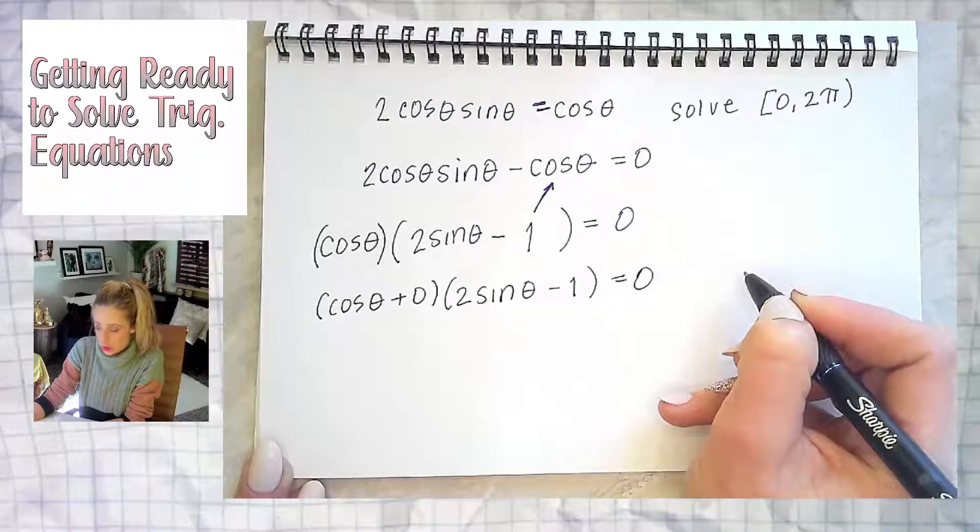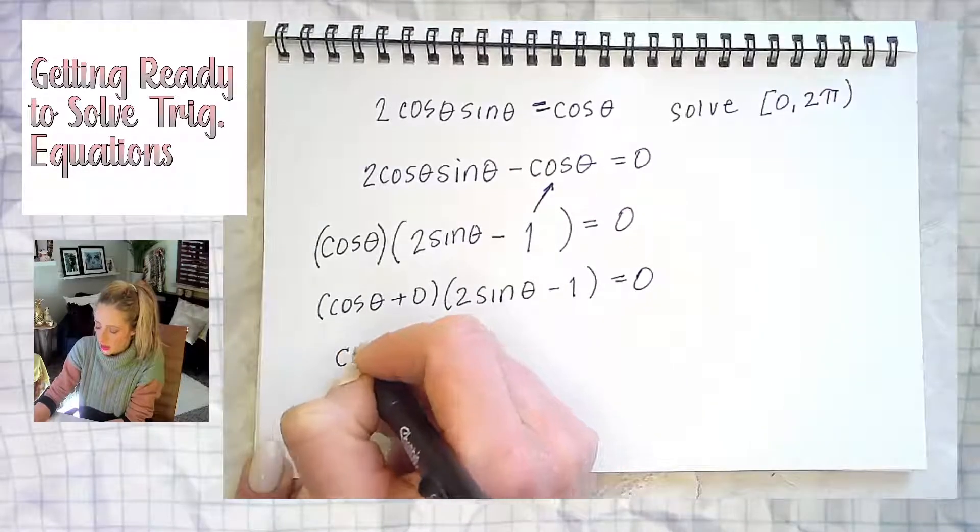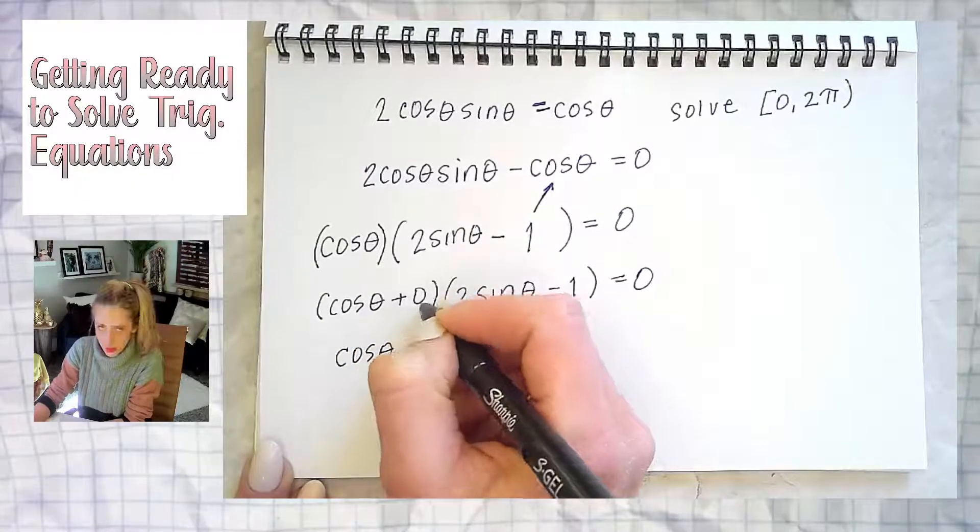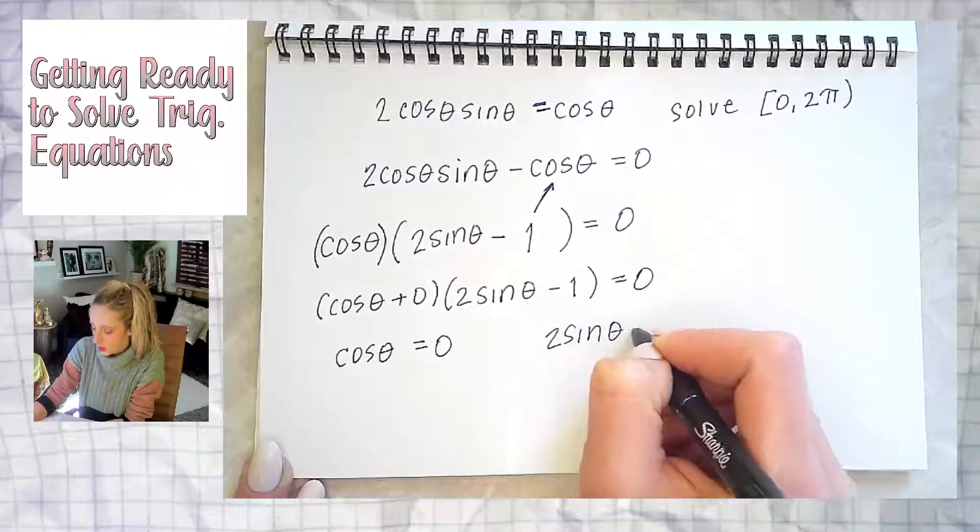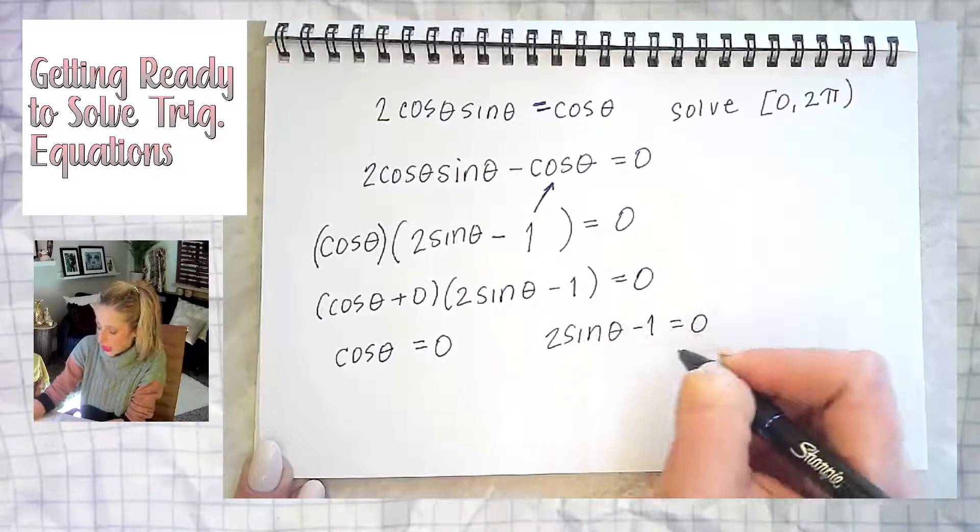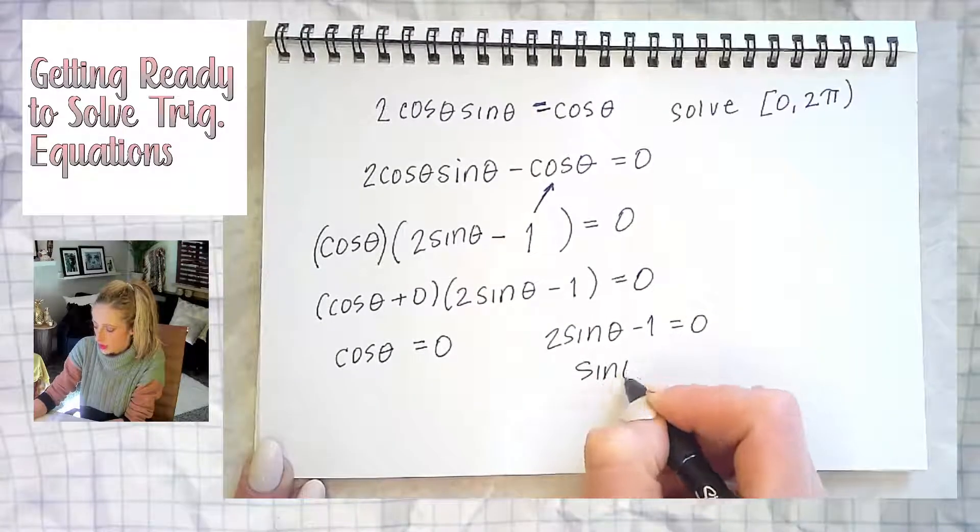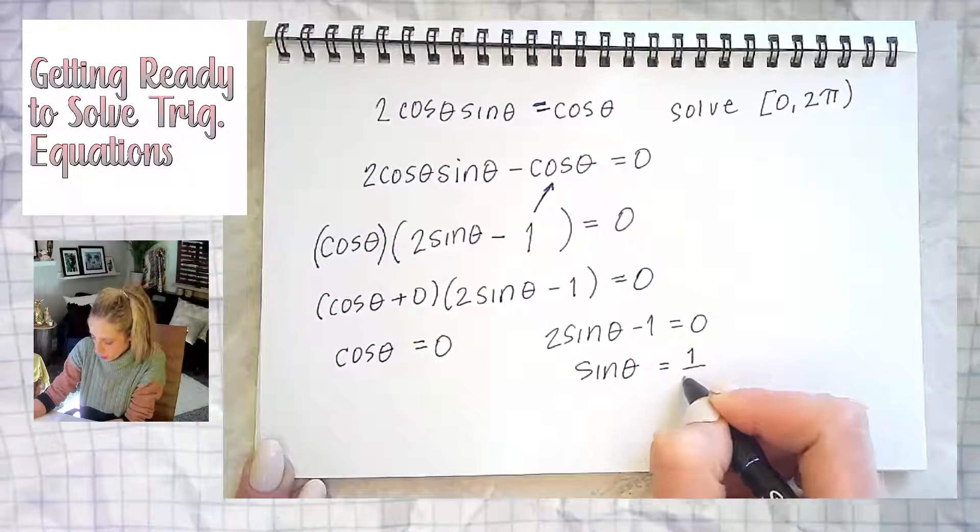All we're going to do now is use zero product property essentially. Cosine theta, I'm not writing plus zero, equals zero. And two sine theta minus one equals zero. Add one and divide by two. I'm skipping that work.